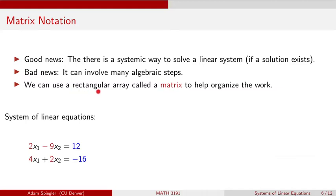A matrix is just a rectangular array of numbers. Here we have this system. In red, I've highlighted the coefficients in front of x1 and x2. On the right side in blue, we have these constants that are corresponding to the right side of the equation.